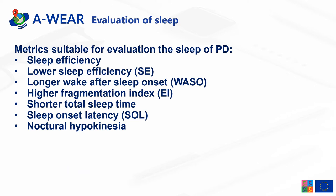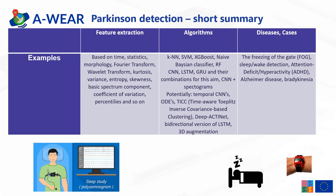I will mention some metrics which could be used for evaluation of sleep in PD patients. Commonly used ones are sleep efficiency, wake after sleep onset, fragmentation index, total sleep time, sleep onset latency, and nocturnal hypokinesia. This work is focused on methodologies which were earlier used for the detection of sleep disorders in the case of attention deficit hyperactivity disorder and heart disease. Additionally, some symptoms of PD were analyzed thanks to actigraphy, like bradykinesia and the freezing of gait.